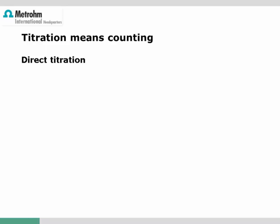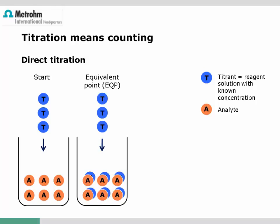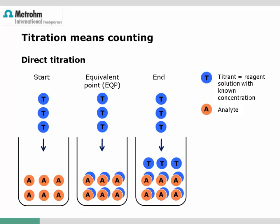Besides the nature of the chemical reaction, we also differentiate different titration principles. The most common is the direct titration: a known amount of sample, either a weight or a volume, is added to a titration vessel and then titrated with a titrant solution of known concentration. The analyte directly reacts with the titrant, and at the equivalence point all sample ions or molecules have reacted. The end of the titration is indicated by a suitable indication method.